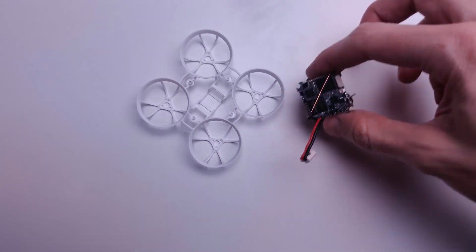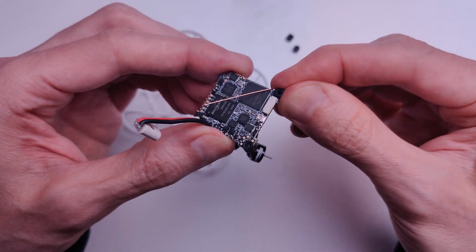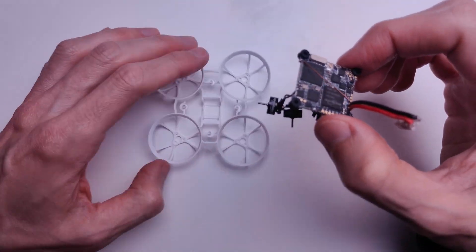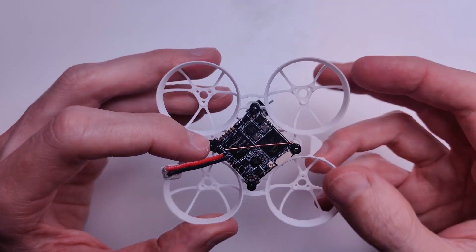This is Beta FPV's Air 65 frame. It is one of the lightest available and it has a great selection of colors. Plus it is easy to get and I can say now that everything fits together really well.